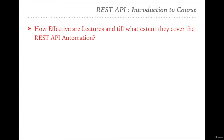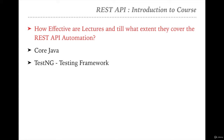We are assuming people enrolling in this course come from different technical backgrounds — some technically sound, some with average skills, some with poor skills, and some with no technical skills at all. So we are starting from the very basics. We will cover complete core Java — variables, data types, OOP concepts, collection frameworks, and collection APIs. Then we will learn about TestNG, which is a testing framework.